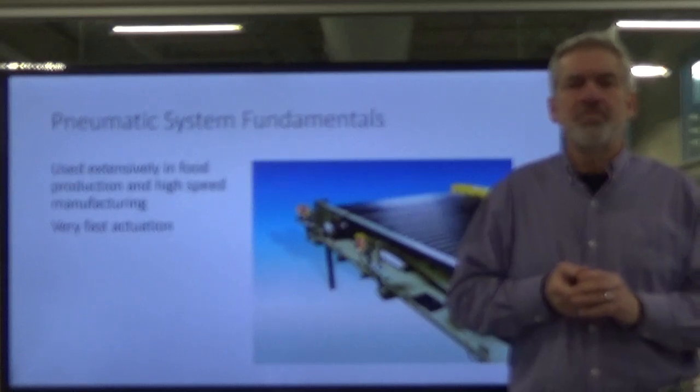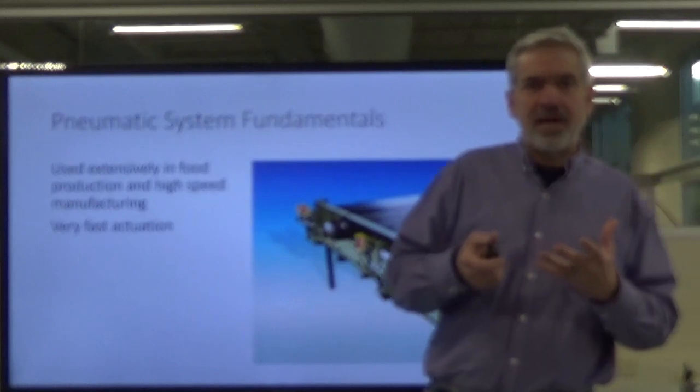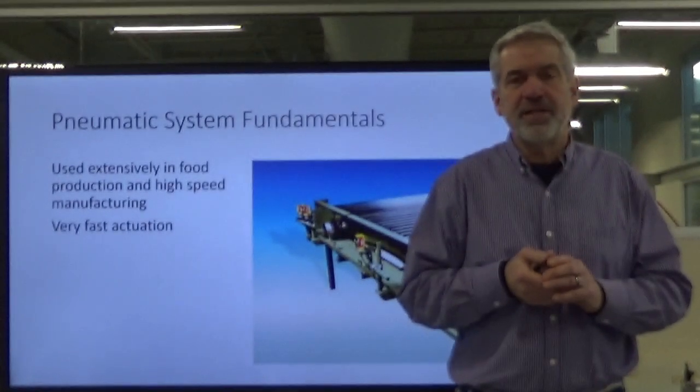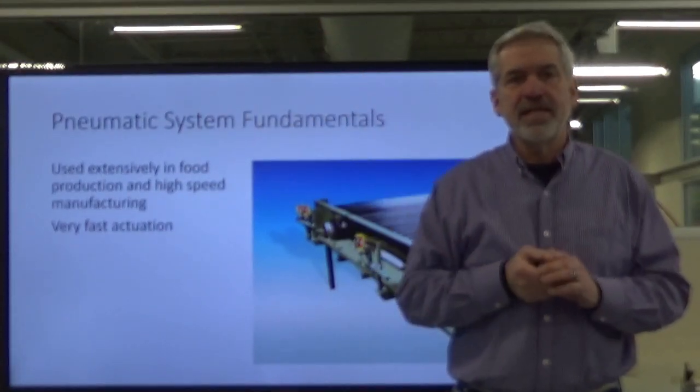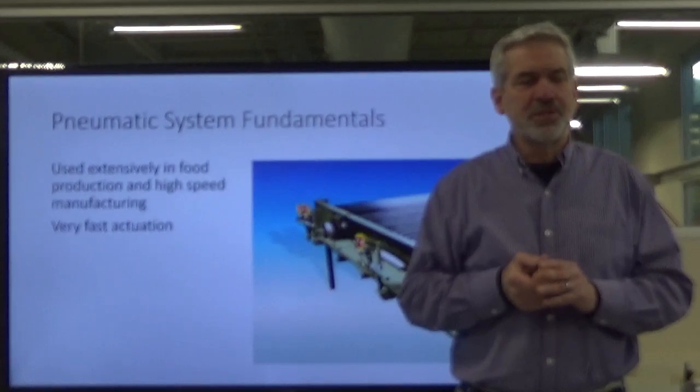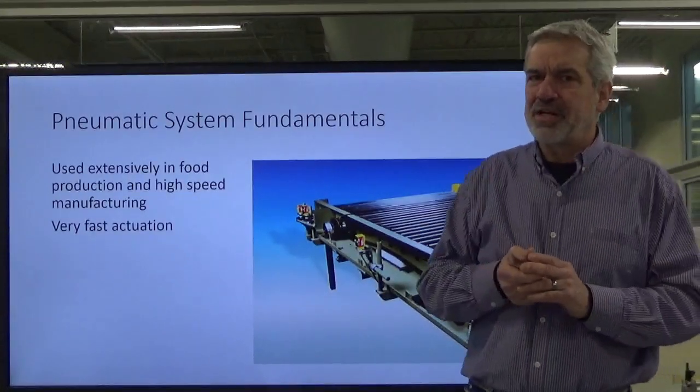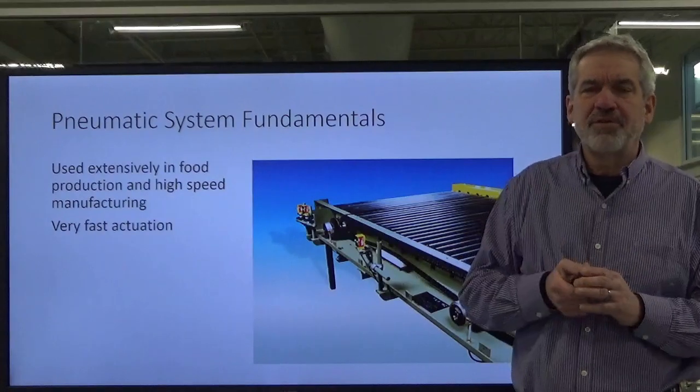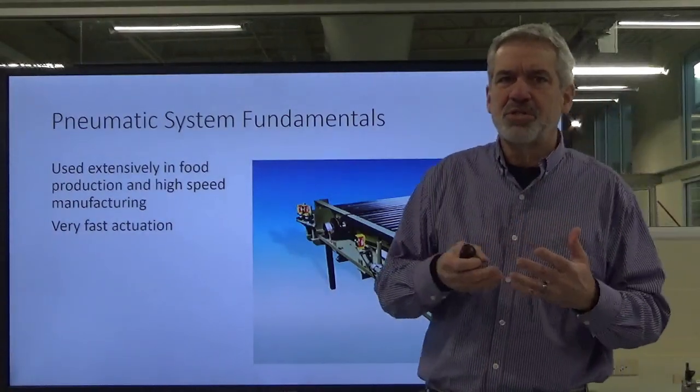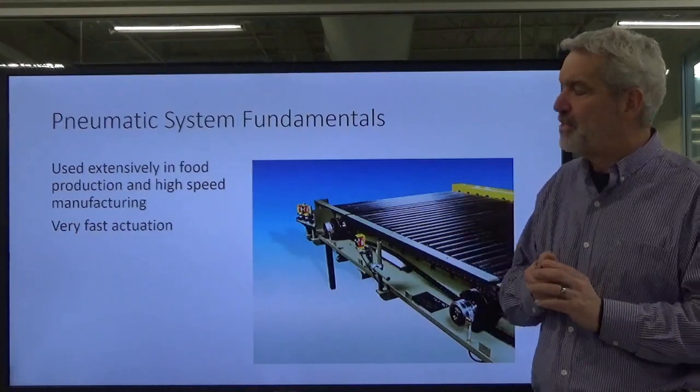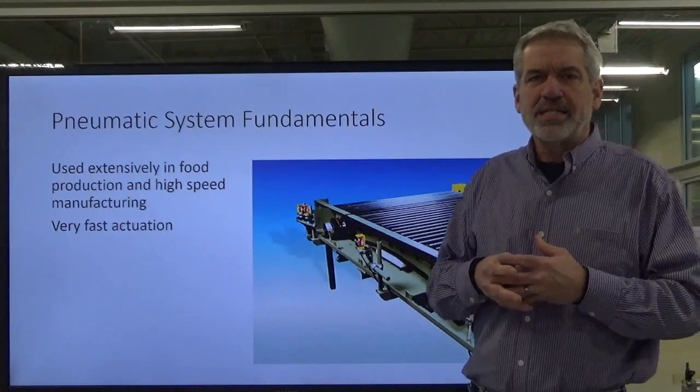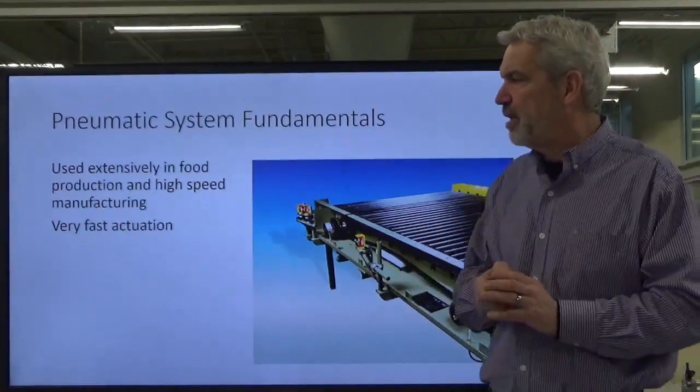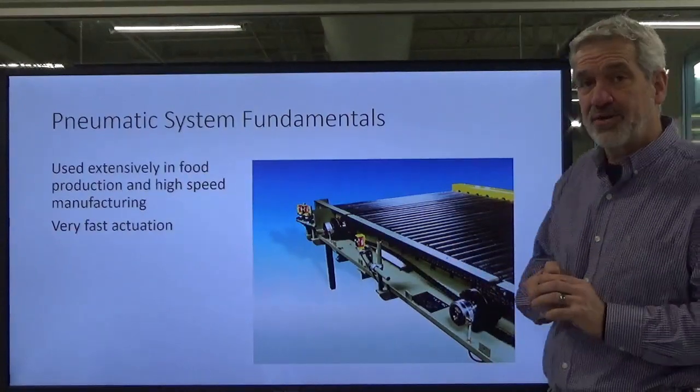If we were to break a hydraulic line and it get into the feed mix or something like that, and we not know it, we could ship several tons of feed to farmers and livestock producers and kill their livestock. Same thing with food for human consumption as well. Don't want to mix those two because it can end on the bad end and ruin somebody's day. But that's one of the reasons they're used in food production. And they're used in high-speed automation as well because they're very fast actuators, a lot faster than hydraulics.